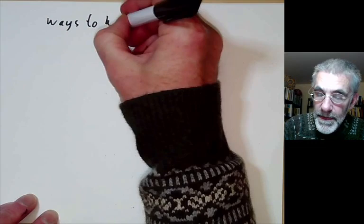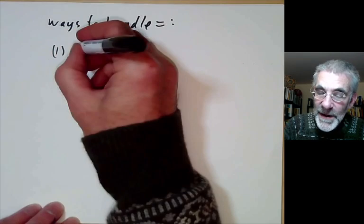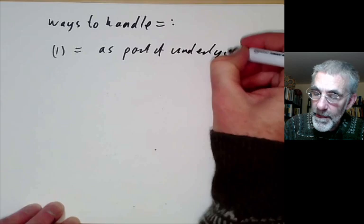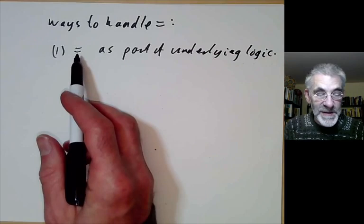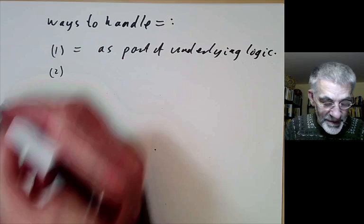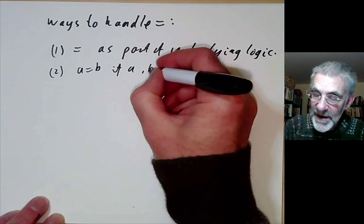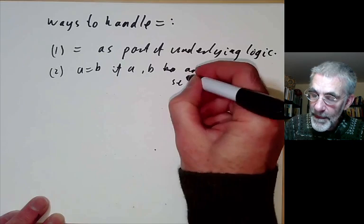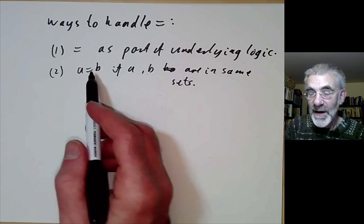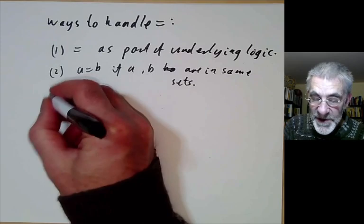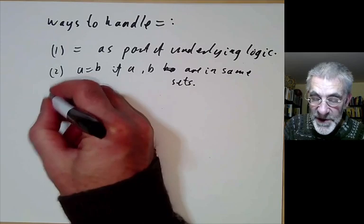In general, there are several different ways to handle equality. So first of all, we can take equality as part of the underlying logic. So instead of taking equality as being something we write axioms for, we assume we're working in some sort of first order logic which already has equality built in. Secondly, we can define A equals B if A and B are in the same sets. So if you think of a set as being a collection of things with some property, this would be like saying A is equal to B if and only if A and B have the same properties. And this was sometimes used as a definition of equality by philosophers.